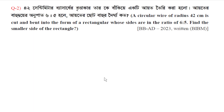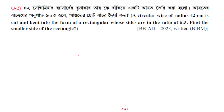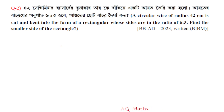Question number two: a circular wire of radius 42 cm is cut and bent into the form of a rectangle whose sides are in the ratio of 6 to 5. Find the smaller side of the rectangle.